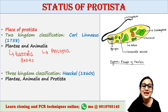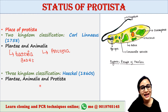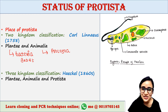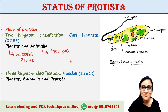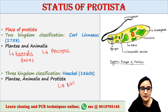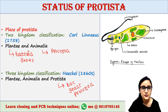Then Haeckel in the 1860s proposed a three kingdom classification. Haeckel's three kingdoms were Plantae, Animalia, and Protista. Kingdom Protista included the unicellular microorganisms such as yeast, bacteria, protozoa, etc. For the first time, he placed unicellular and multicellular organisms separately. So in Protista he placed bacteria, yeast, and protozoa — all of which are unicellular.